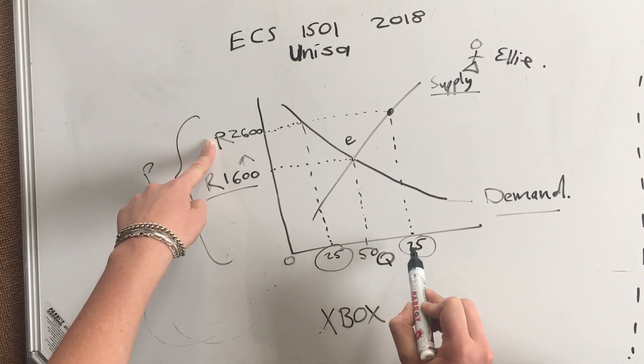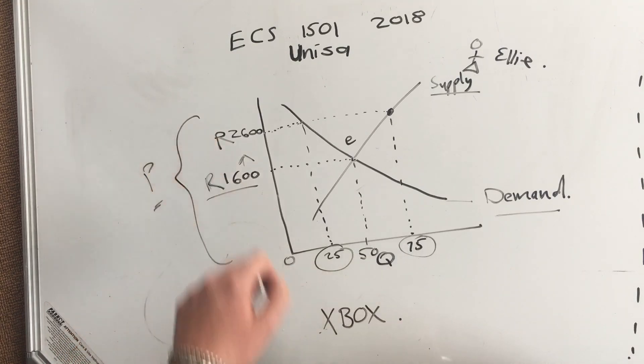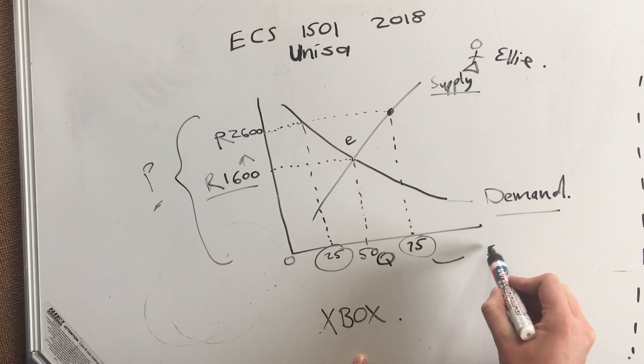So 75 people are offering an Xbox at 2600 rand, but only 25 people are willing to buy that. Which means 50 people are going to be left with their Xboxes without being able to sell them.